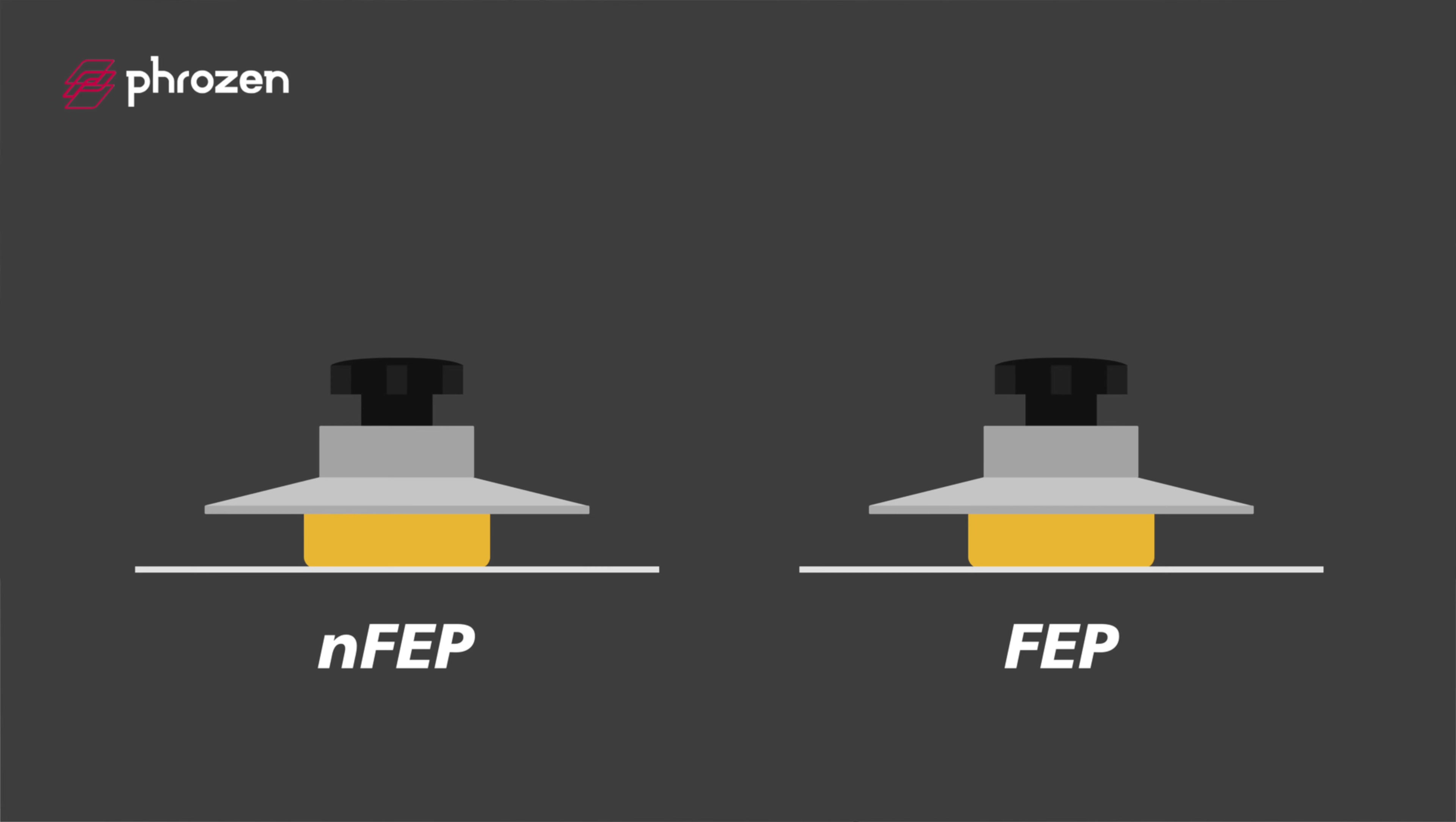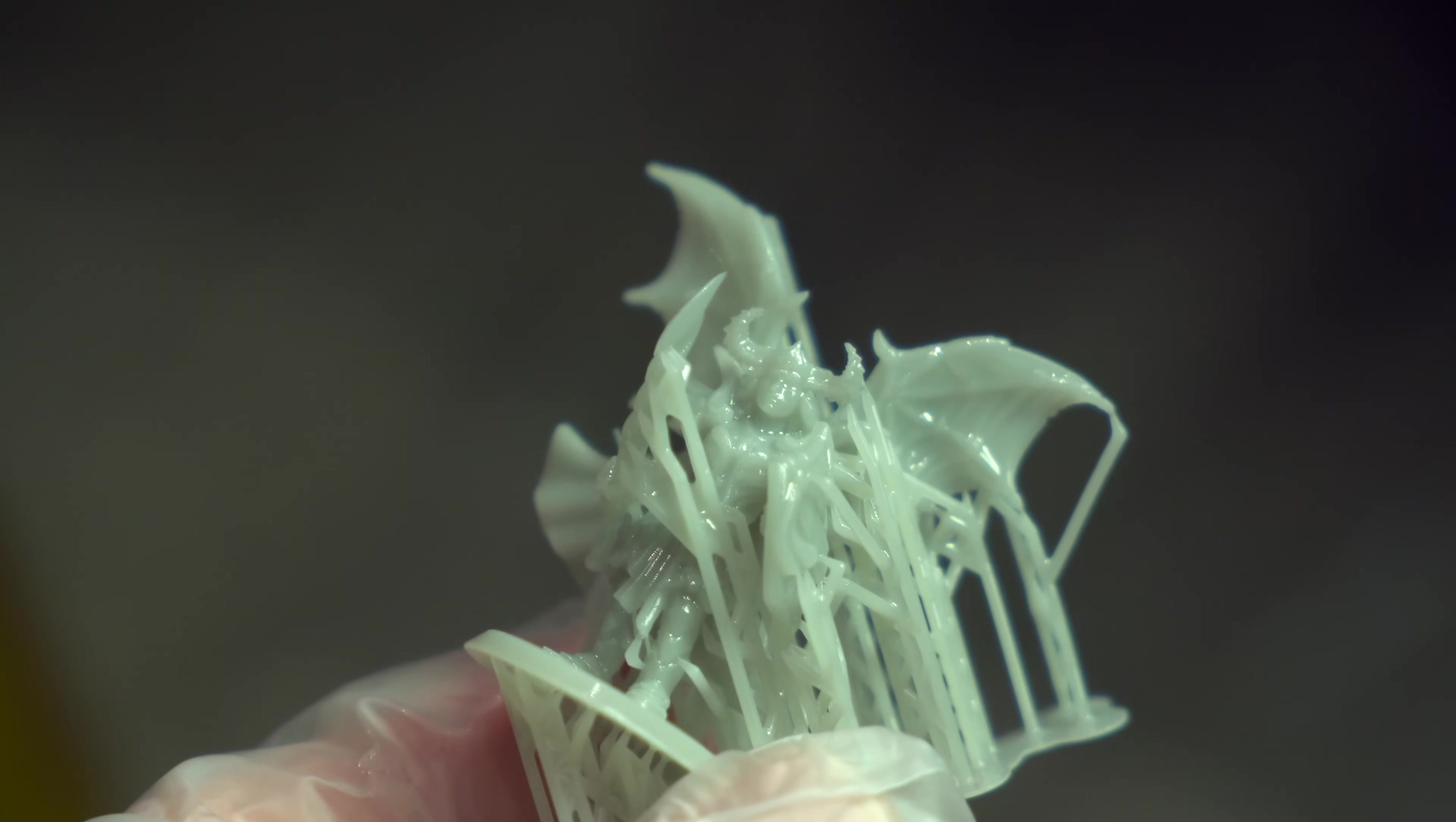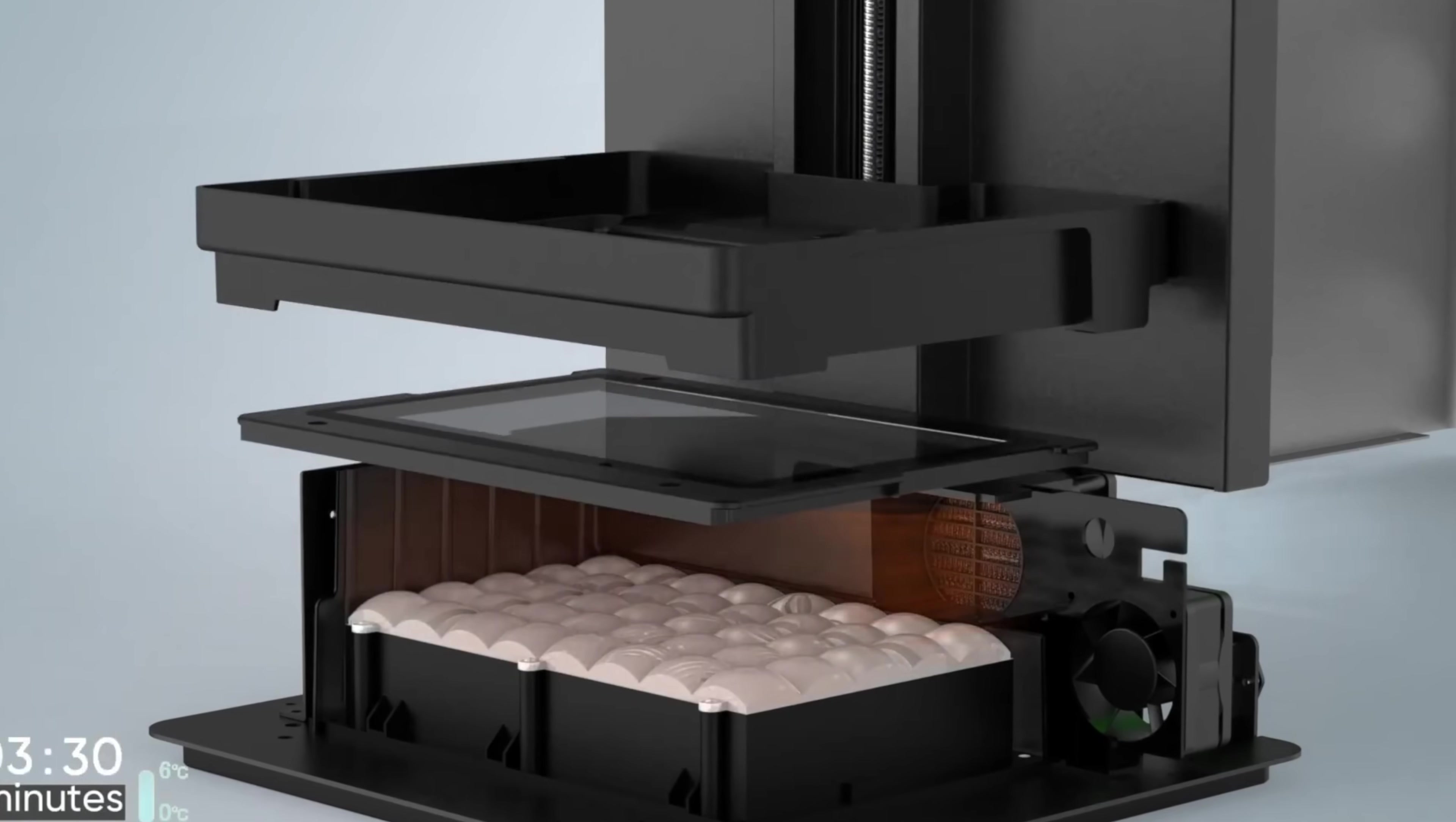N-FEP has a smoother surface, resulting in less suction forces when the build plate lifts away from the resin vat. This allows you to use lighter supports, making removal easier and yielding a cleaner surface for the finished product. Underneath the vat, there is a built-in resin heater.